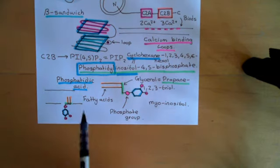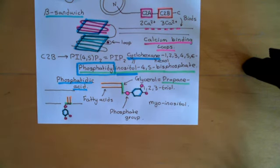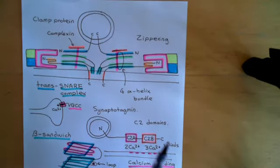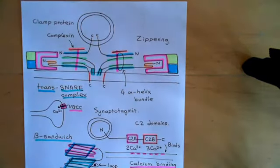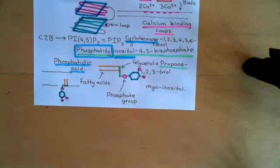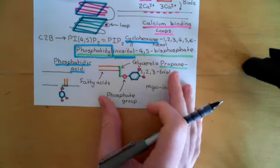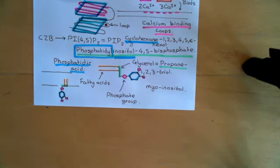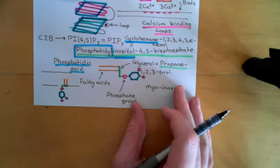The C2B domain of synaptotagmin is capable of binding to PI(4,5)P2 molecules that are in the plasma membrane — note they are not in the synaptic vesicle membrane. There's no chance that C2B will accidentally end up binding to the synaptic vesicle membrane because PI(4,5)P2 is not in the synaptic vesicle membrane, and we'll come back to that later when we discuss endocytosis. So C2B is also going to bind to this important component of the plasma membrane, and that's also going to help bring these two membranes closer together.